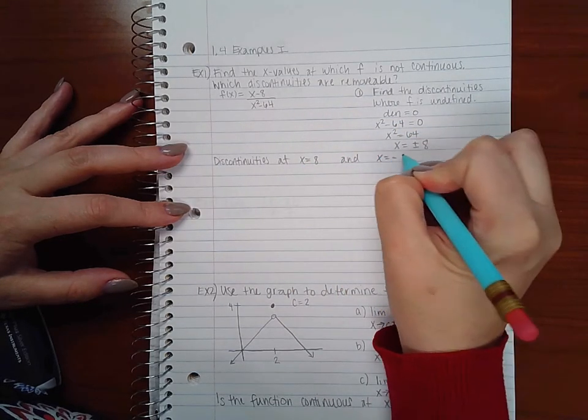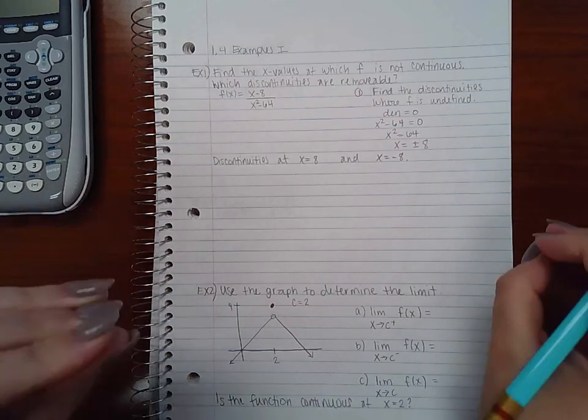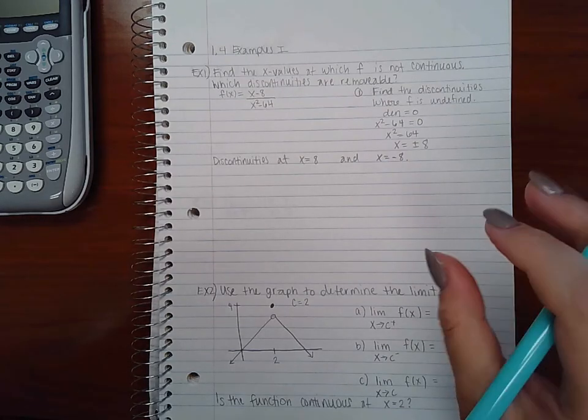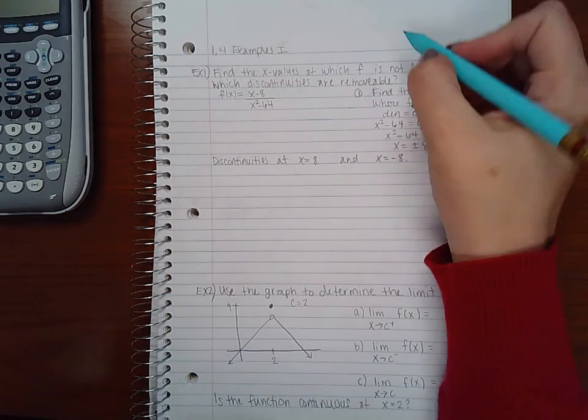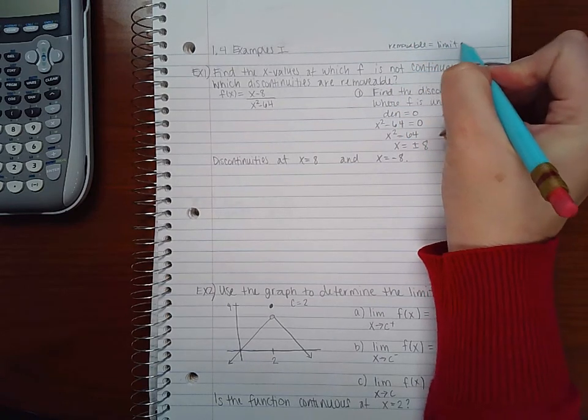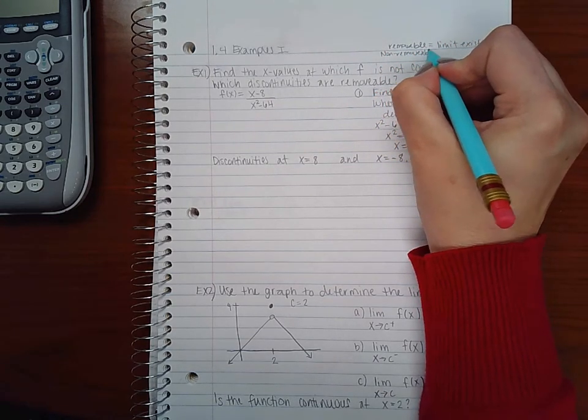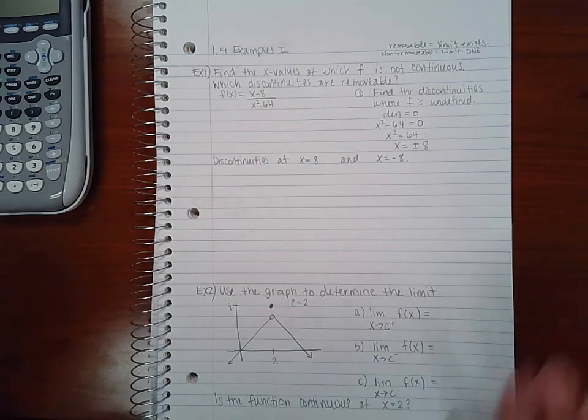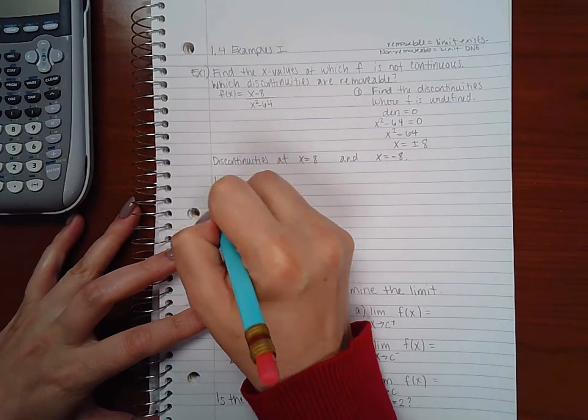Now I'm writing them a little bit separate because now I've got to figure out which ones are removable and which ones aren't. Now remember what distinguished between a removable and a non-removable: removable meant the limit exists, and non-removable was because the limit does not exist. So we've basically got to figure out whether the limit exists or does not exist.